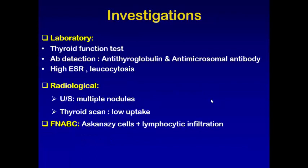Investigations needed: thyroid function tests — 5% of patients are in the state of thyrotoxicosis and 95% in the state of myxedema (hypothyroid). Tests for antibody detection: antithyroglobulin and antimicrosomal antibodies. We also expect high ESR and leukocytosis. Radiological investigation: ultrasound will show multiple nodules, thyroid scan shows low uptake, and fine needle aspiration biopsy cytology shows Askanazy cells and lymphocytic infiltration.